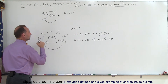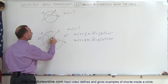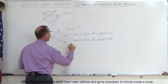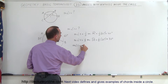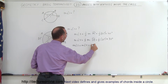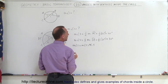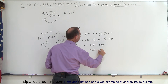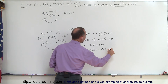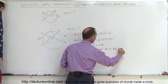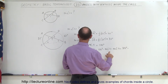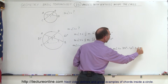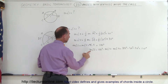Now we have the measure for angle 3 and angle 4. We can find angle 5 because this is a triangle, and the sum of the angles must add up to 180 degrees. So the measure of angle 3 plus angle 4 plus angle 5 equals 180 degrees. Therefore, angle 5 equals 180 minus 40 minus 30, which equals 110 degrees.